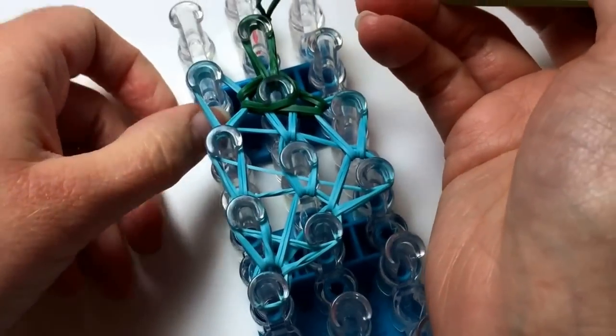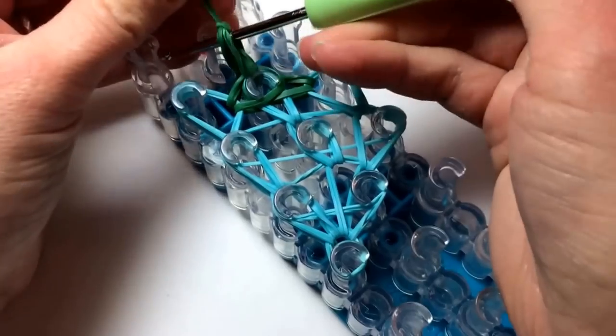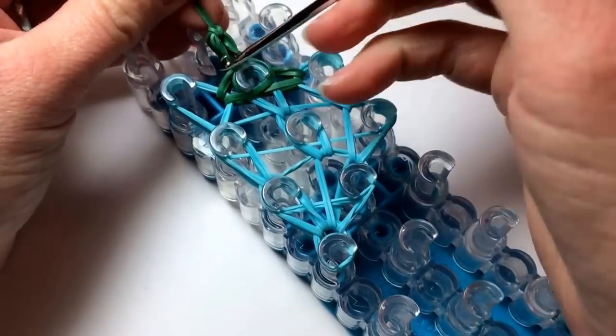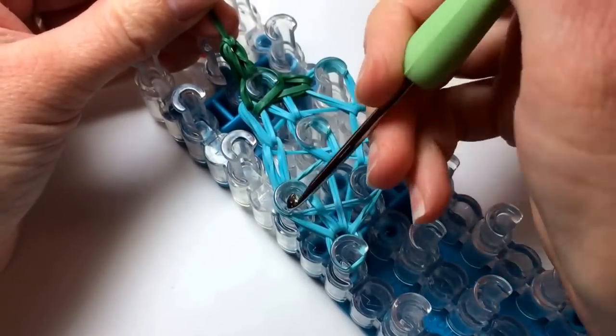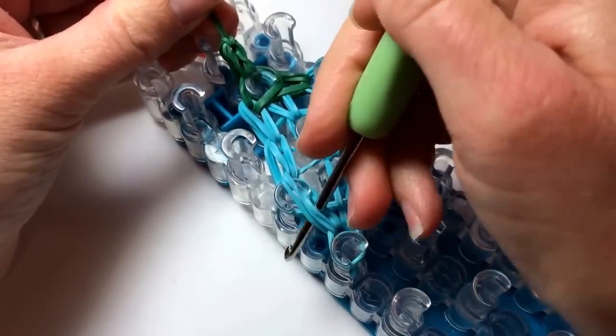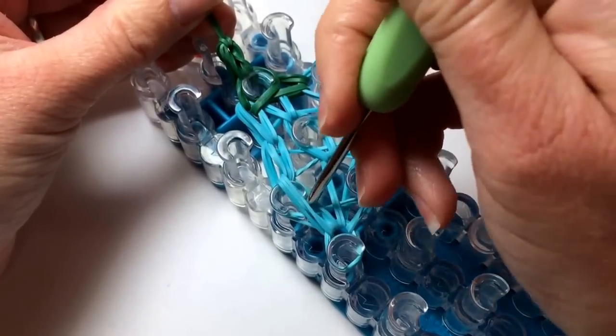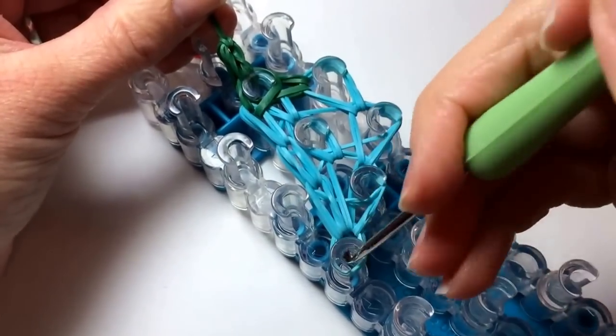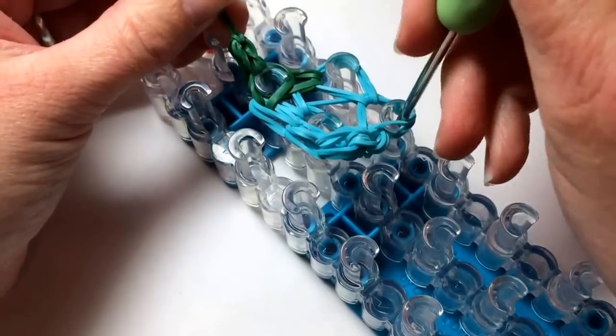And then we are ready to take this off the loom. Just popping all of these rubber bands off. Some of these are pretty tight, so I use my hook to help so that none of the rubber bands get too strained.